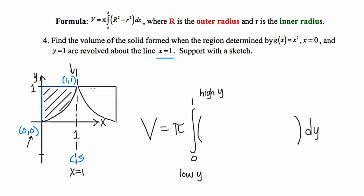For the outer radius, I place my pen on the axis of revolution and extend sideways to the left until reaching the farthest edge of the region. No matter where I place it along the axis, the span is always 1 — whether at the bottom, middle, or top. So no matter where we are between 0 and 1, the outer radius is going to be 1. I'll go ahead and put that in: outer radius squared equals 1 squared.